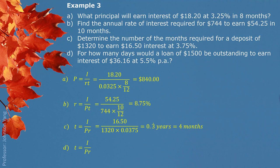Part D: for how many days would a loan of $1,500 be outstanding to earn interest of $36.16 at 5.5%? This is similar to Part C. We put all the information in properly. The answer for t comes out representing years, so we switch to days by multiplying by 365, giving us about 160 days. You can always round up when the question asks for how many months or days and you have a decimal.